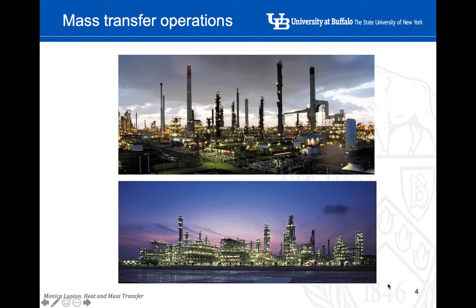These pictures show different processes in industry, most likely a refinery. All the towers here are most probably mass transfer equipment — either absorption units, desorption units, or distillation columns, because they are usually very tall. The same as heat transfer, mass transfer is very common in industry. These are probably the two main pillars of any chemical process when we need to transfer elements from one phase to another.